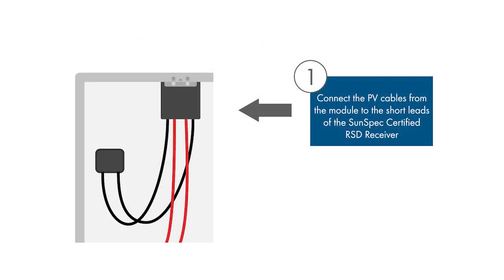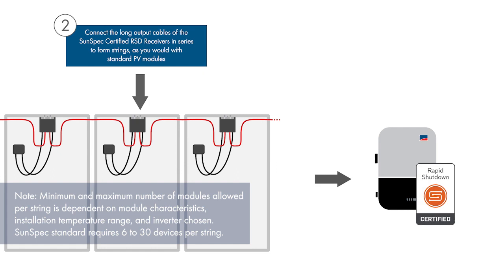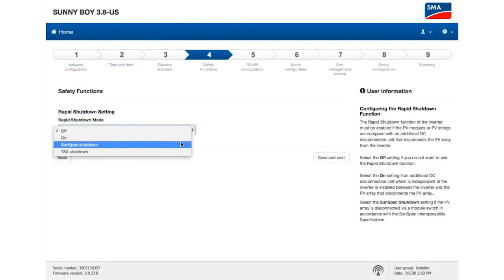Once all the modules have been connected to their shutdown receivers and the output leads connected as strings, the strings can be connected to an SMA inverter equipped with a built-in SunSpec certified shutdown transmitter. When the inverter's built-in SunSpec certified transmitter is turned on, the shutdown receivers will allow their modules to operate and the string voltages will change to the appropriate open circuit voltages based on the module type and number of modules in each string.